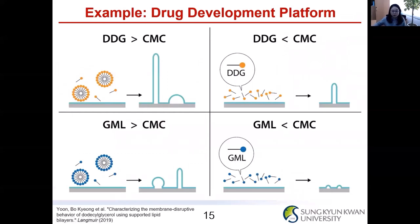Another example is that we can study drug development using this platform. We distinguished the difference between dodecyl glycerol (DDG) and GML, glycerol monolaurate. DDG has a very similar chemical structure to GML and is also known to have strong antibacterial activity.